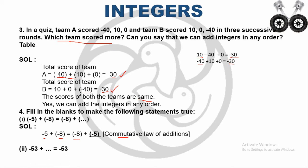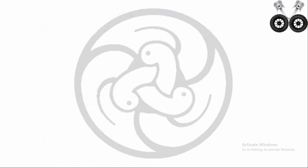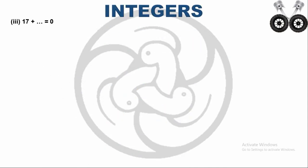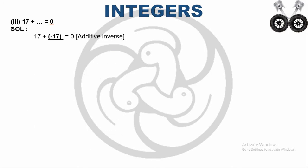The second sub-question: minus 53 plus dash equals minus 53. The answer on the right side is the same as the integer on the left side, so we must add 0. Here, 0 is the additive identity. The next statement: 17 plus dash equals 0. To get 0, we add two integers with different signs, so 17 plus minus 17 equals 0. Here, -17 is called the additive inverse.